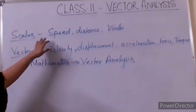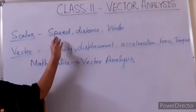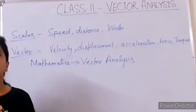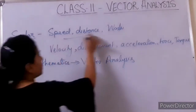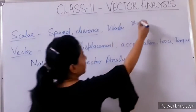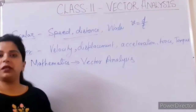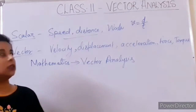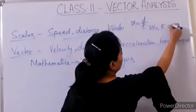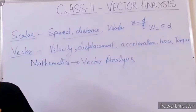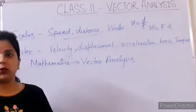Scalar quantities — like speed, distance, work and many more — can simply be added, subtracted, multiplied or divided by simple algebra. For example, speed equals distance divided by time; both are scalar quantities. But if you want to find work, you need a force and a displacement, and here you cannot use simple arithmetic — you need a dot product, which is a scalar product. So W equals F dot D, where the dot represents the scalar product.